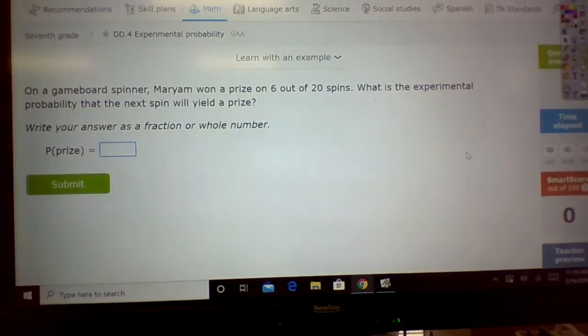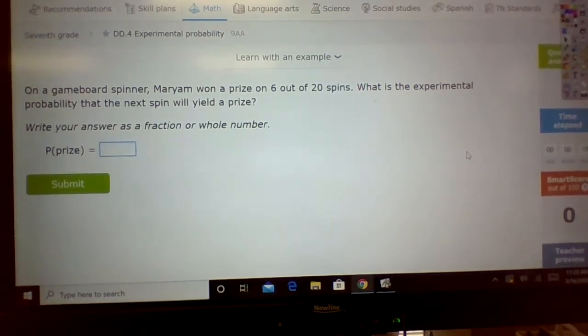Okay, so today we're going to deal with DD4, that's experimental probability. Experimental probability means experimental—you did it. You're not just saying what could happen. This is what actually did happen.